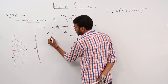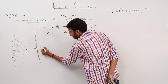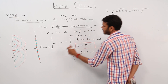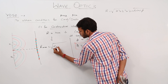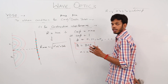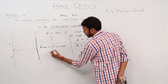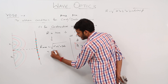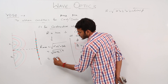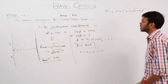What is the maximum value of r? Putting cosφ = 1 into r = √(a² + b² + 2ab), we get r = √(a + b)² = a + b. So r_max = a + b.